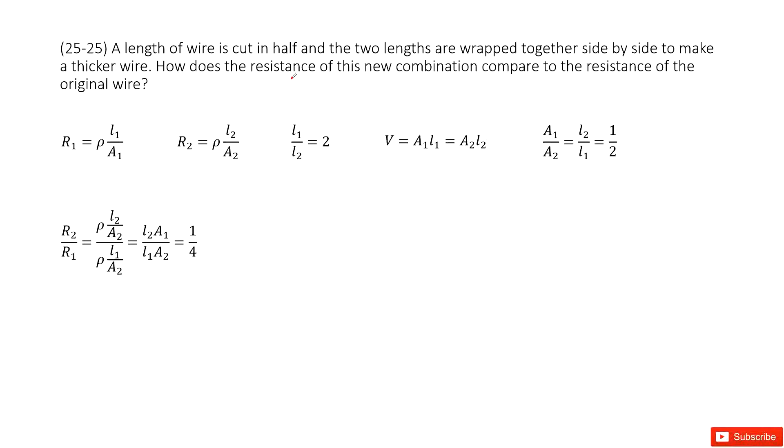We can consider the original one as number one, the final one as number two. This is wire one, wire two. As we can see it cut in half, so that makes L1 over L2 equal to two. Do you agree? Yes.